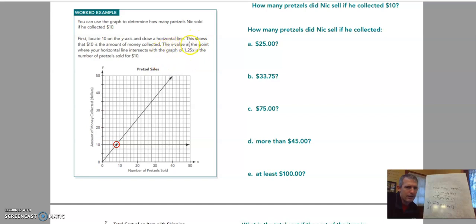It says the x value of the point where your horizontal line intersects with both the graph of 1.25x is the number of pretzels sold for $10. Interesting. So I guess they're reducing it down to 1. How much would it cost for 1? So you know what I could do? I could use an equation instead.